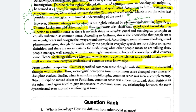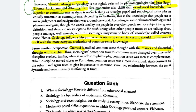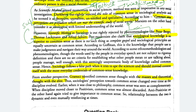Postmodernists say that sociological knowledge is no more superior to common sense, as there is no such thing as a complete gospel truth. Sociological principles are as uncertain as common sense. Ethnomethodologists and phenomenologists note that although words in everyday speech are not subject to rigorous definition, and there are no set criteria for establishing meaning, people manage well enough with this seemingly unsystematic body of knowledge called common sense.